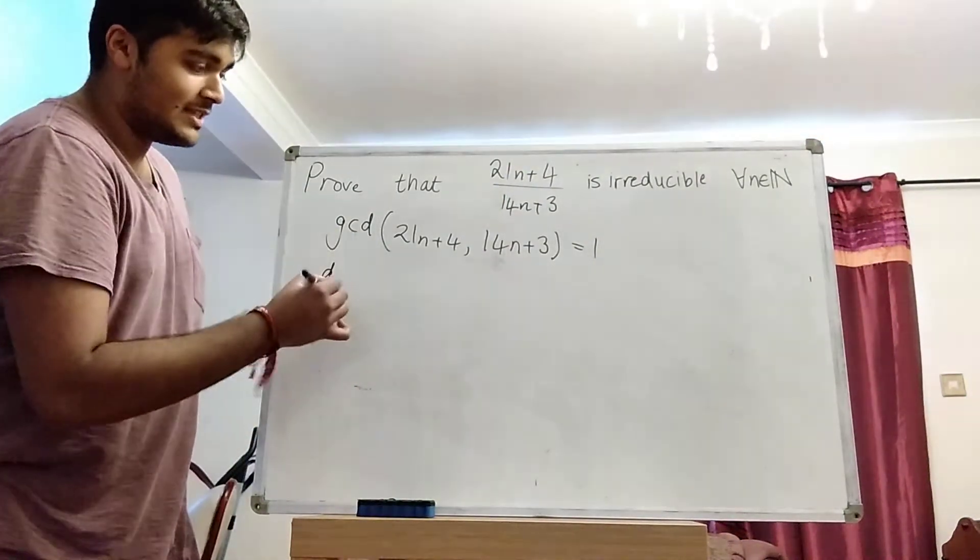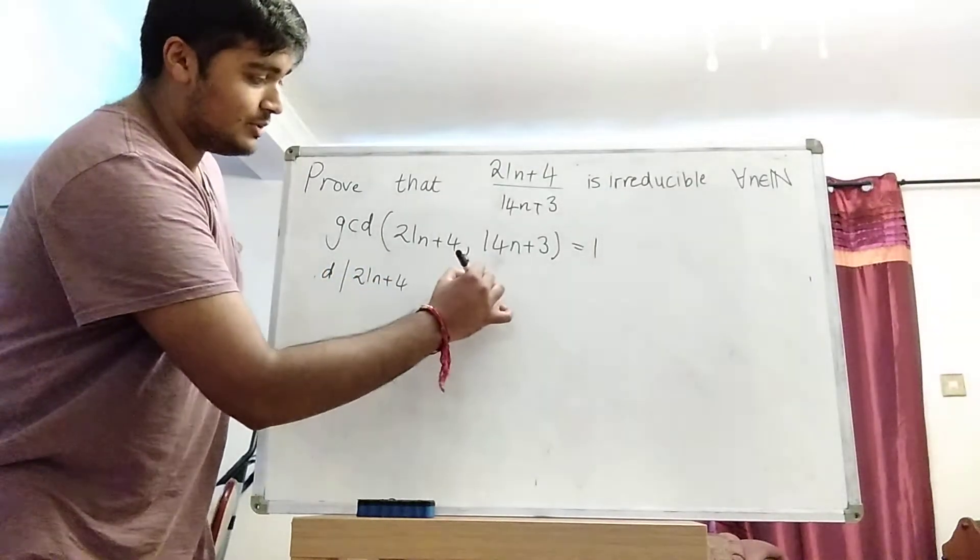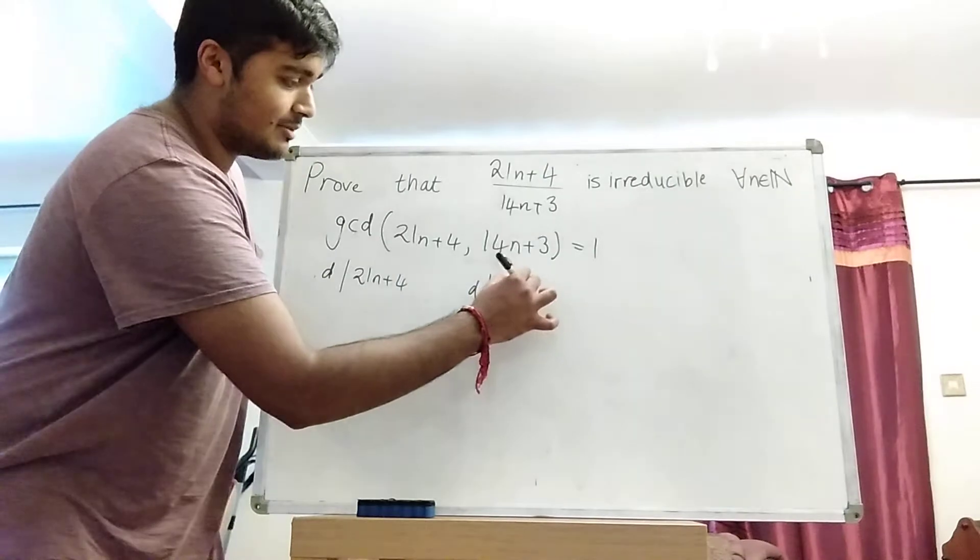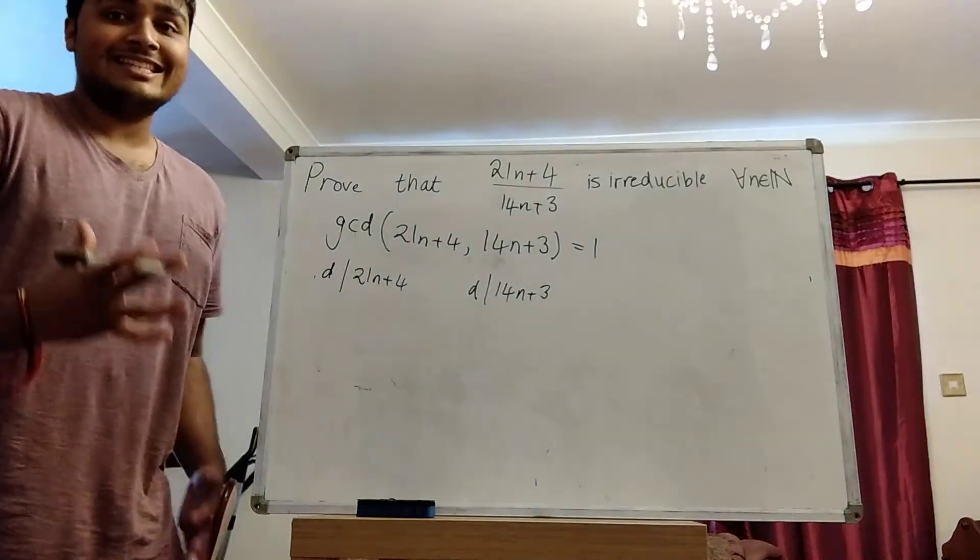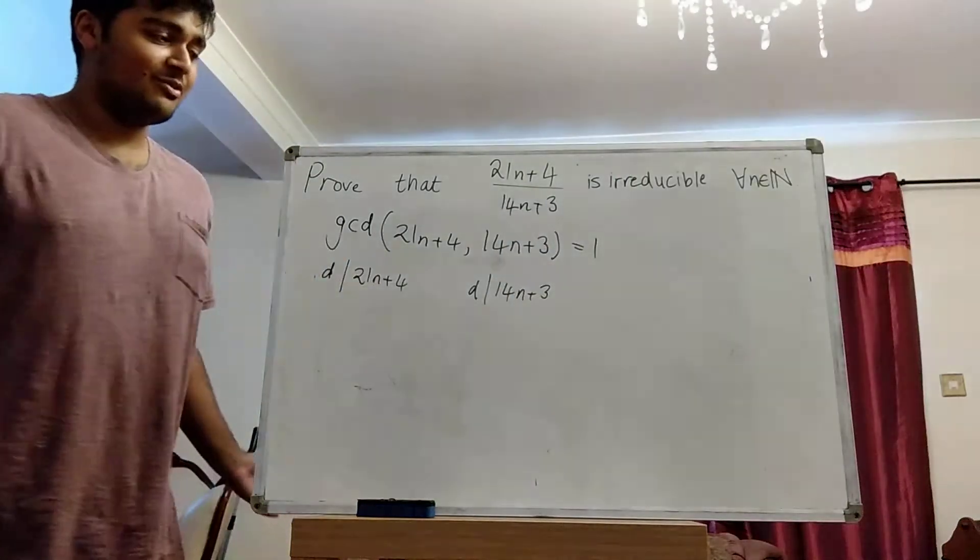Okay, well suppose D is a positive integer that divides 21n plus 4 and also D divides 14n plus 3. I want to show that D is therefore 1 and thus we have this statement here and we've solved the problem.